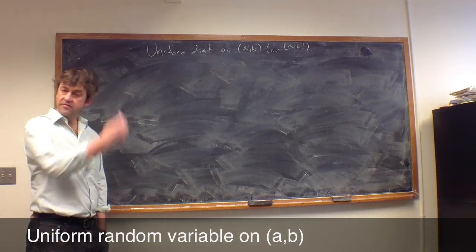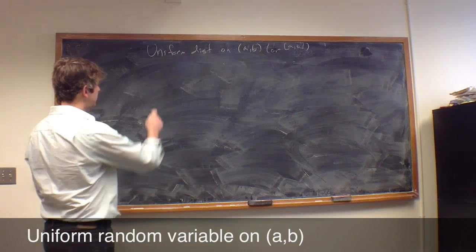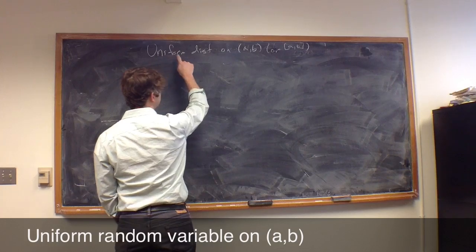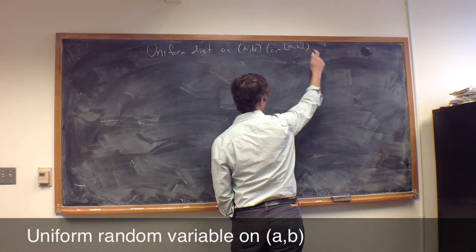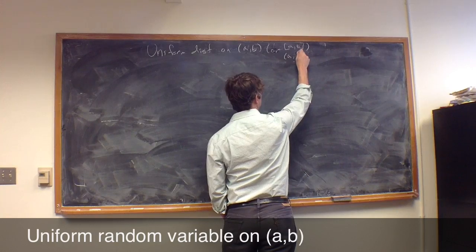Now I want to give another example of a continuous random variable. We say that a random variable is uniformly distributed on an interval, an open interval or closed interval (a,b).